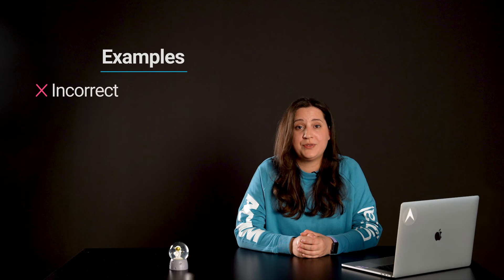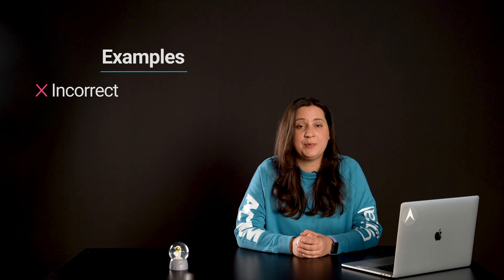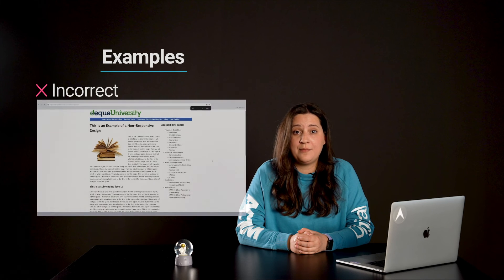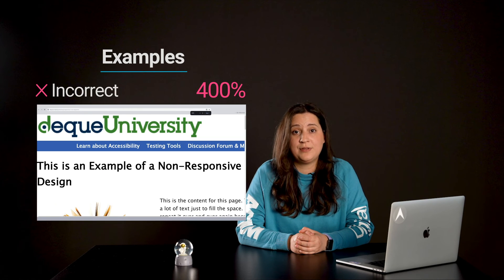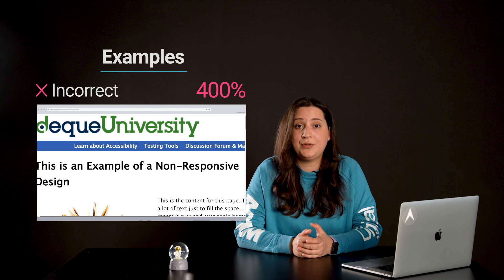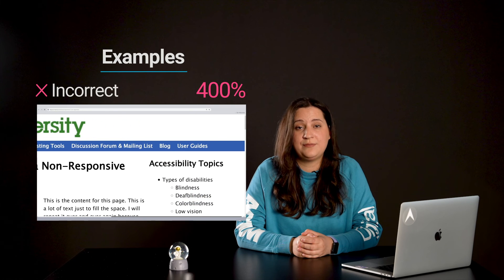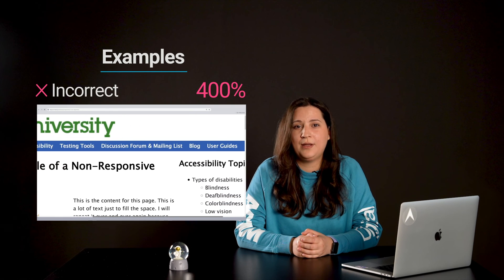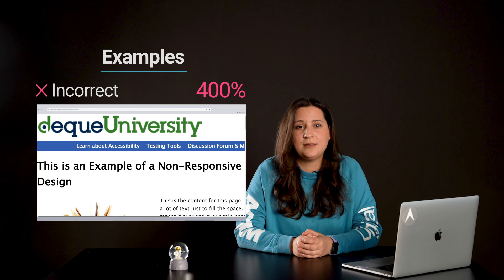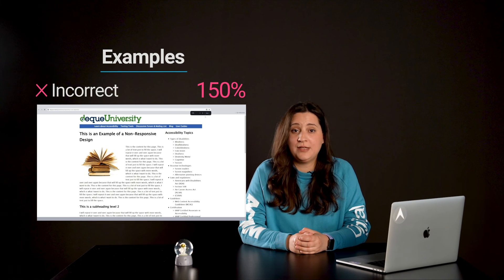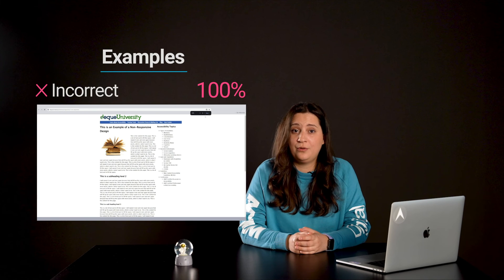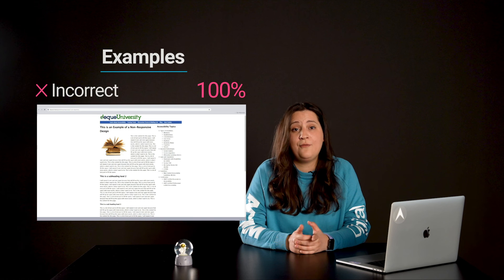And ensuring images and content reflow properly to maintain readability and usability at different screen sizes. The following example shows the incorrect usage or implementation of accessibility — a so-called non-responsive website. This is an example of a non-responsive website from deckuniversity.com. This site illustrates the common pitfalls of non-responsive design, such as fixed-width layouts that don't adjust to different screen sizes, leading to poor user experience on mobile devices and tablets. The content and images do not reflow or resize, demonstrating the importance of responsive design practices for accessibility and usability across various devices.